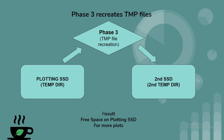Phase 3 recreates your temp files into smaller temp files. If you set a second directory in another SSD, then the files will get recreated onto this second directory and therefore free up space in the plotting SSD. And now with free space on the plotting SSD, you can do another staggered plot if you'd like to.